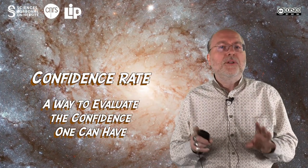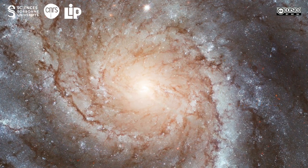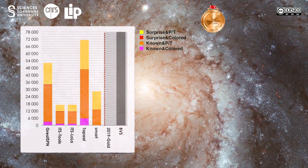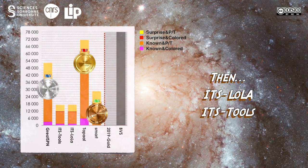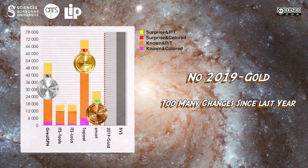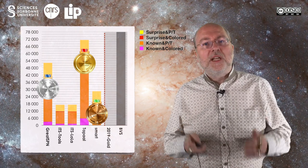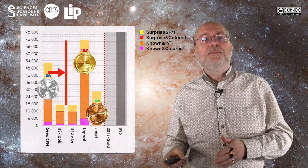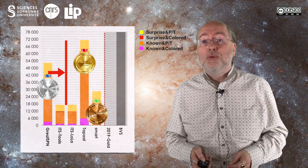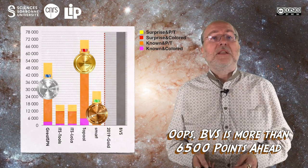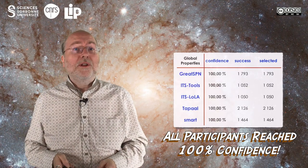For the global property family of examinations, five tools did participate. The gold medal goes to TAPAL, then GreatSPN grabs the silver one, and SMART gets the bronze medal. They are followed by ITS-Lola and ITS-Tool, which are very close to one another. There is no 2019 gold medal since many changes were done this year to this examination — in 2019 it was reduced to deadlock detection only. All tools reached a 100% confidence rate for this examination.